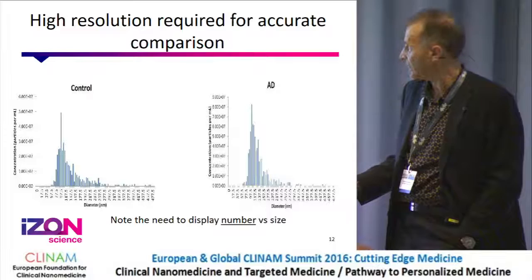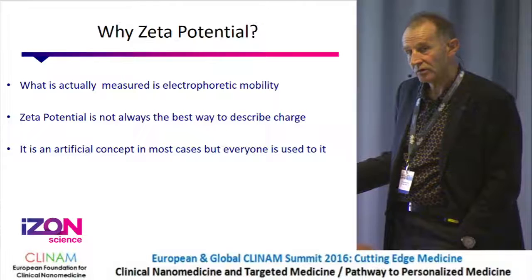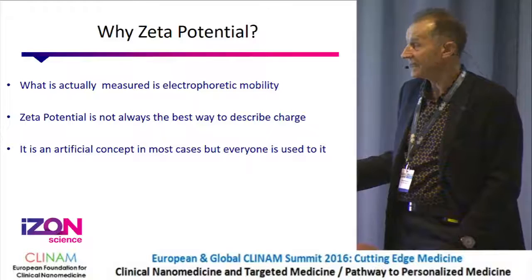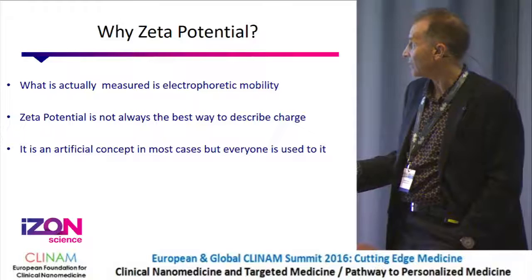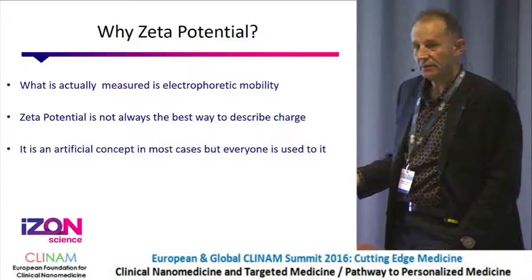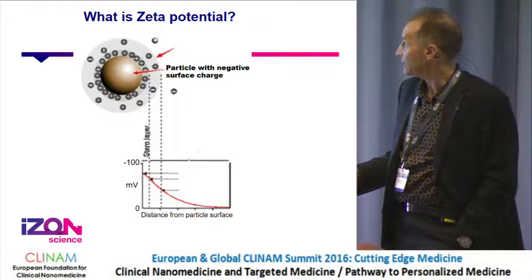High resolution means you don't get that random software-generated curve from DLS — you're actually getting the detail. In this case, these are exosomes in cerebrospinal fluid: one control, and one from a person with Alzheimer's disease. Now — why zeta potential? Everybody is familiar with it, but what is actually measured is electrophoretic mobility. It's an artificial concept, but everybody is used to it, so that's why it carries on. We quite like people to use electrophoretic mobility directly.